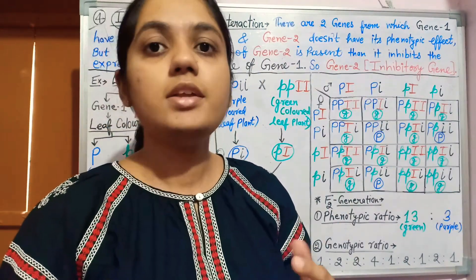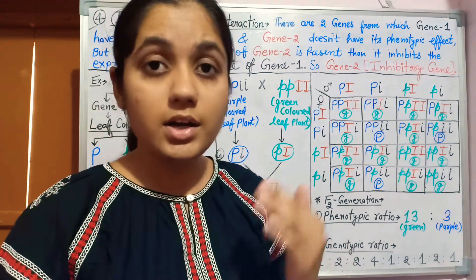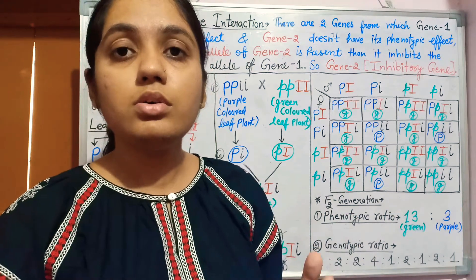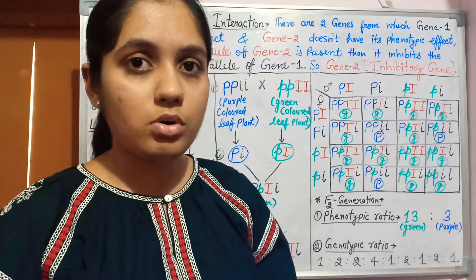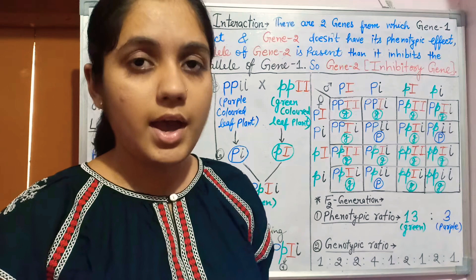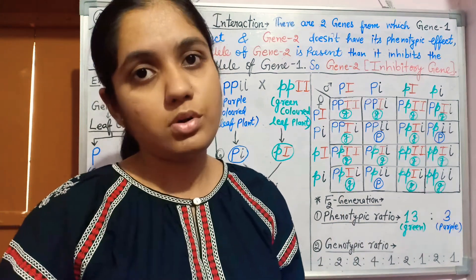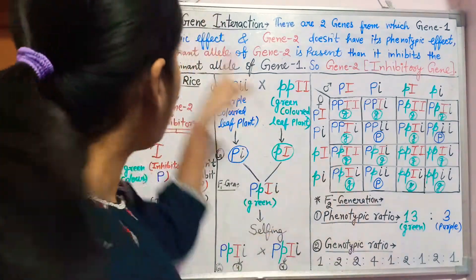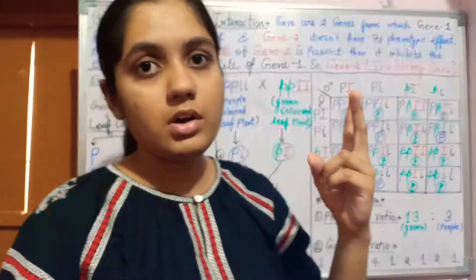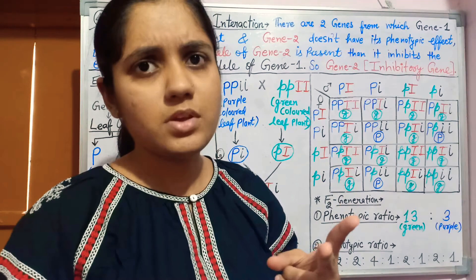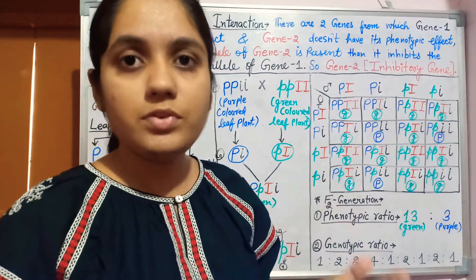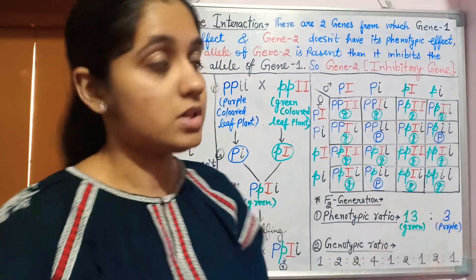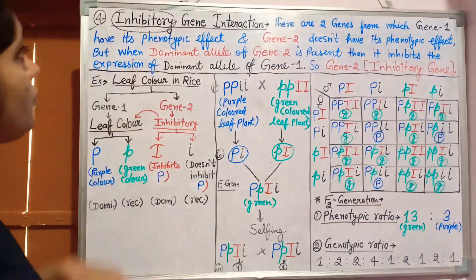Intergenic means it is between two different genes, and these two different genes can be present on the same chromosome at different loci, on homolog one or homolog two, or on non-homologous chromosomes. I have already discussed the first three types: the modifying gene interaction, complementary gene interaction, and duplicate gene interaction.